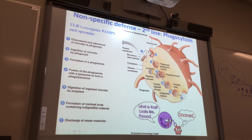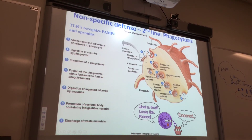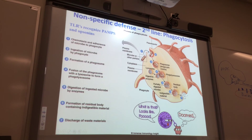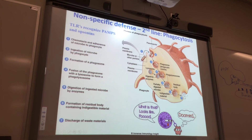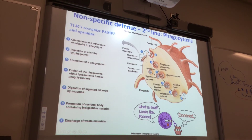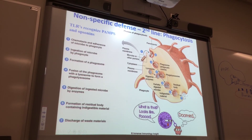Look at all those steps — that's kind of complicated. But he's doomed. The neutrophil is like 'looks like food' because it's going to phagocytize the foreign invader. This is an antibody — kind of looks like a tuning fork.